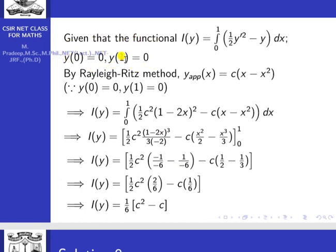To satisfy the boundary conditions, we assume the approximate solution y(x) = c·(x − x²). When x = 0, y = 0 and when x = 1, y = 0, so both boundary conditions are satisfied. This is the approximate solution: c·(x − x²).